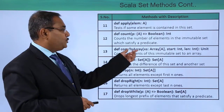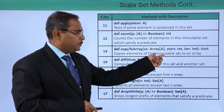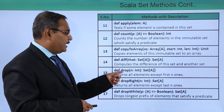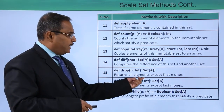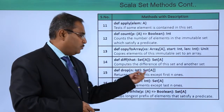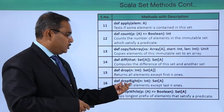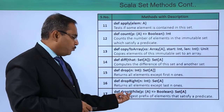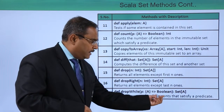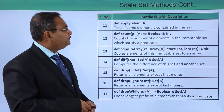We have copyToArray, which copies elements of this immutable set to an array. We have diff. We have drop, which returns all elements except the first n elements where n is passed as an input parameter. We have dropRight and dropWhile, which drops the longest prefix of elements that satisfy a certain predicate.